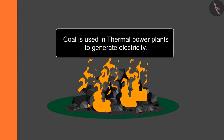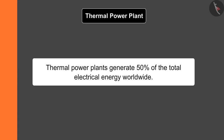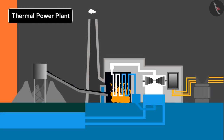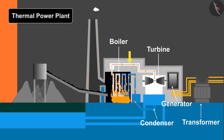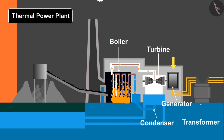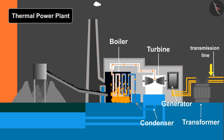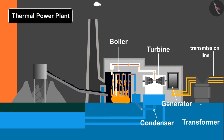Coal is used in thermal power plants to generate electricity. Thermal power plants generate 50% of the total electrical energy worldwide. A thermal power plant has five major components: boiler, turbine, condenser, generator, and transformer. The burning coal in the boiler heats up water in tubes and converts it into steam. This steam rotates the turbine due to increased pressure. The turbine is connected to a generator, which converts mechanical energy into electrical energy. This electrical energy is then transmitted via transmission lines to different grids, and the steam is condensed and sent back for reuse. This is the cheapest and easiest way to generate electricity, but it is also a major cause of air pollution.